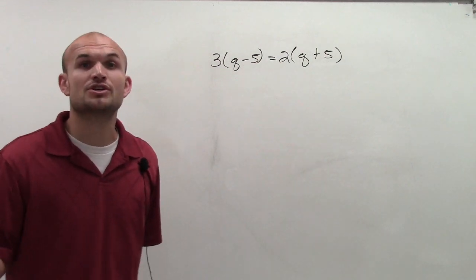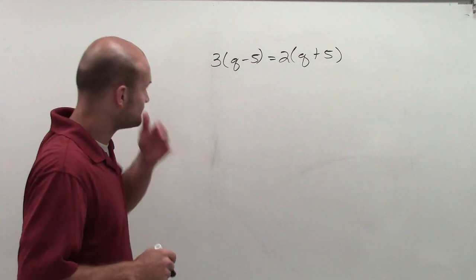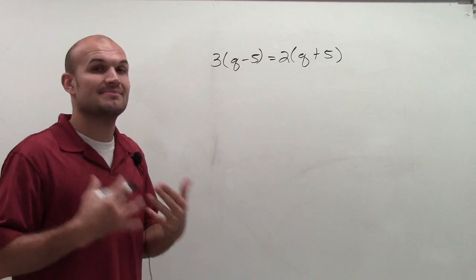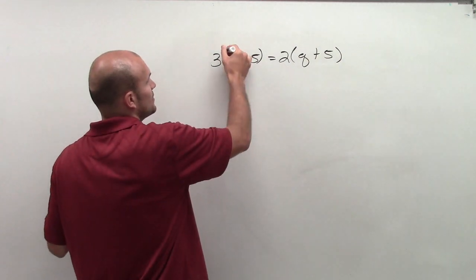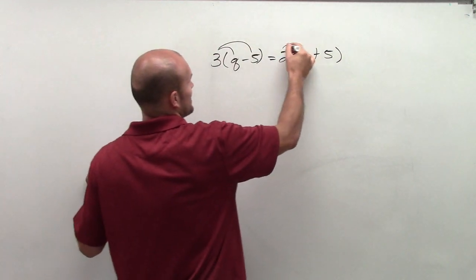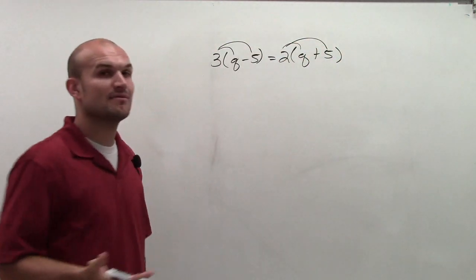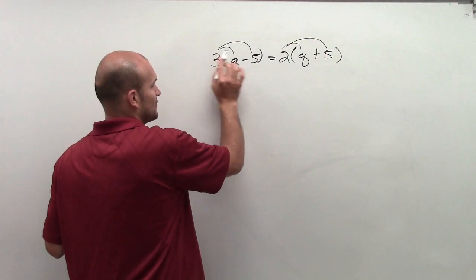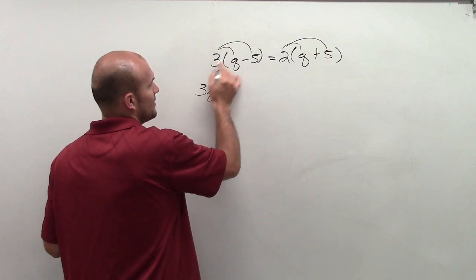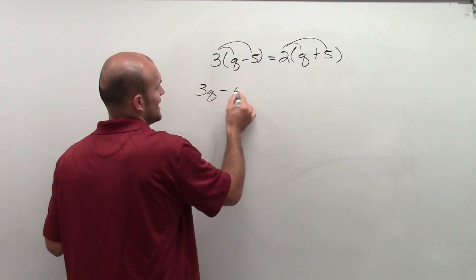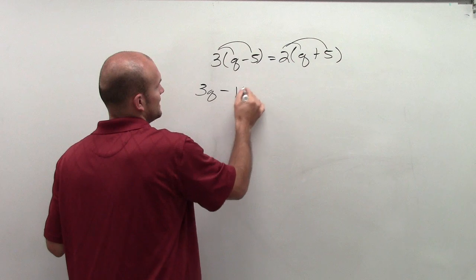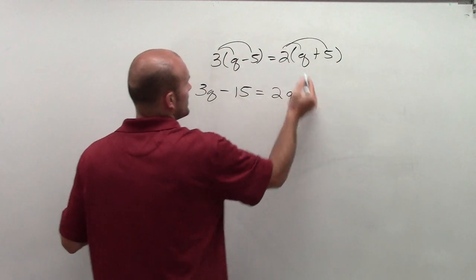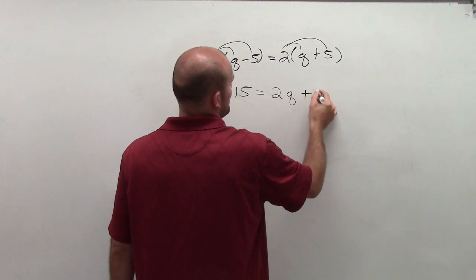I notice I have two q's, which are my variable. So to get these by themselves, the first thing I need to do is simplify the left and the right side, and the only way to do that is to complete the distributive property. So I'm going to multiply 3 times q, which is 3q, and then 3 times negative 5, which is negative 15, equals 2 times q, which is 2q, and then 2 times 5, which is positive 10.